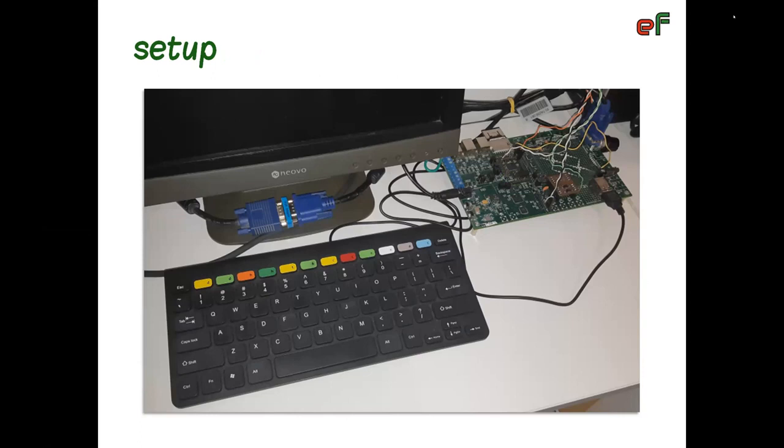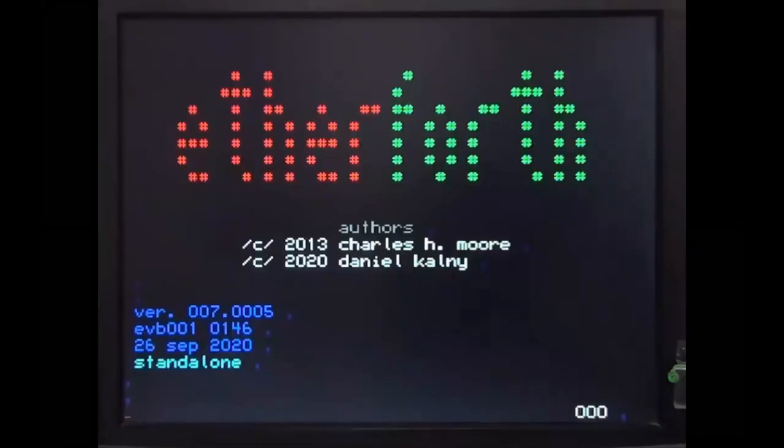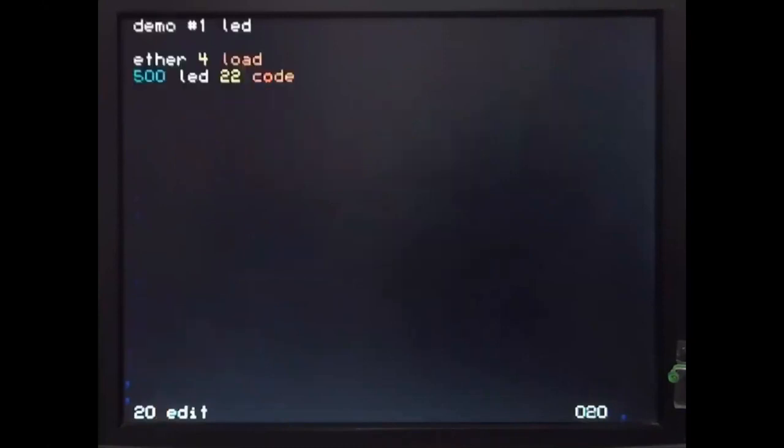With this setup and a few other components, I'm going to show some simple demo applications. What simpler application can we start with than controlling an LED attached to the target chip's GPIO pin? We power up the system, an intro screen shows up, and a blinking cursor at the bottom indicates the system is ready. The green LED has been attached to the monitor frame, so we can see when it turns on and off.